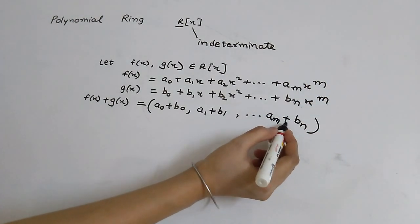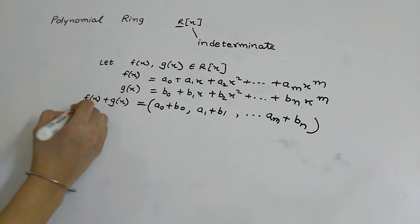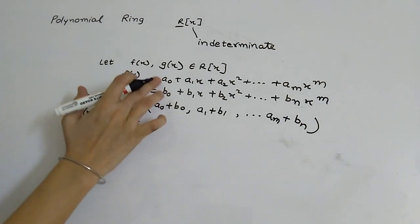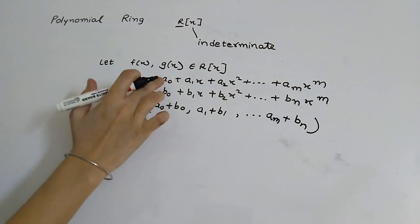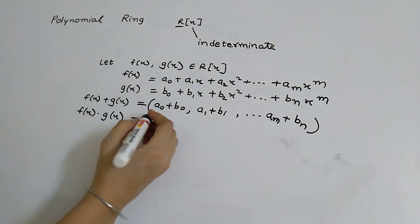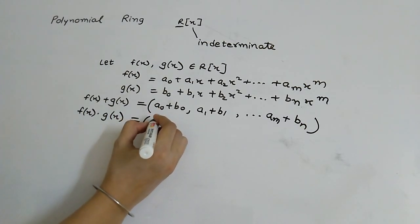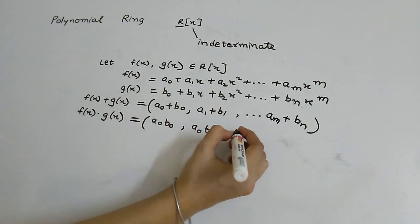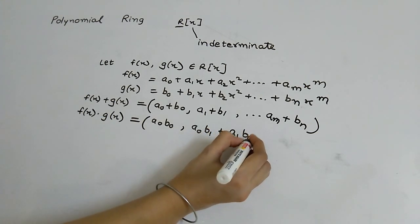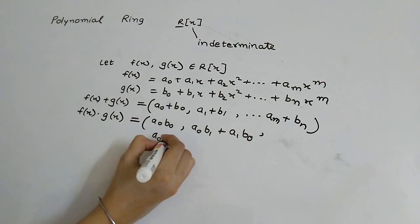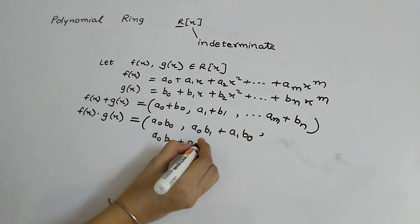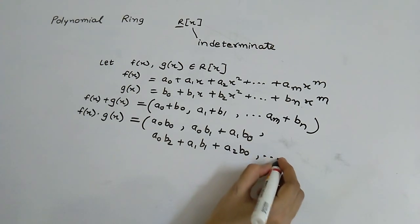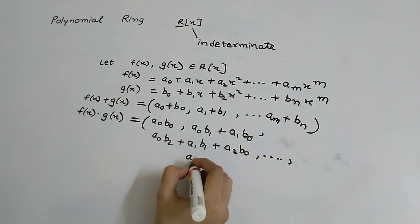Now we will perform multiplication f(x) · g(x). The coefficients of the product are: a0·b0, then (a0·b1 + a1·b0), then (a0·b2 + a1·b1 + a2·b0), and so on, up to am·bn.